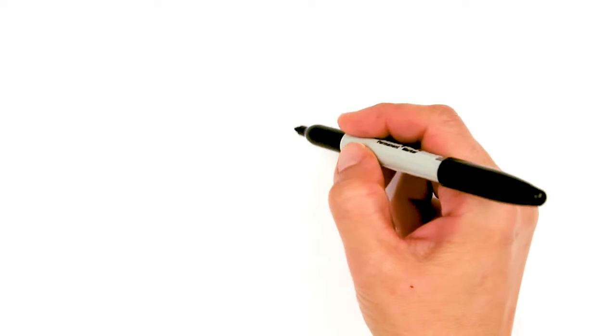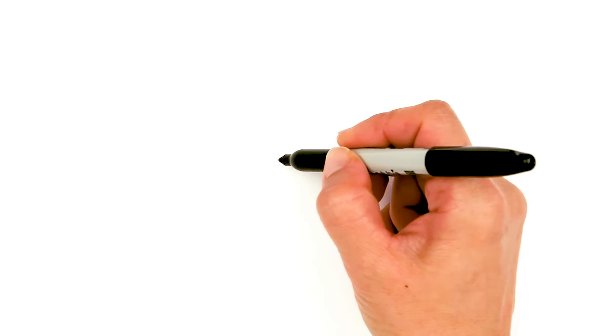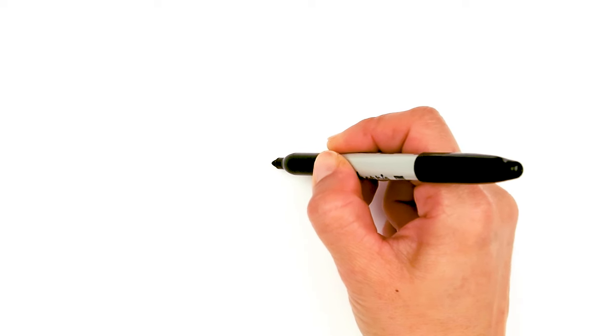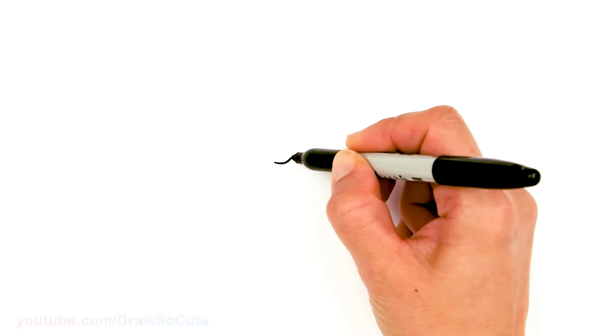To draw some cookies and milk for Santa we're gonna first start by drawing our chocolate chip cookies. So we're basically just gonna be drawing some wobbly ovals. I'm gonna start right here and our first cookie on top is gonna have some bite marks. So I'm gonna start right here and just draw some bite marks, maybe about three of these curves.